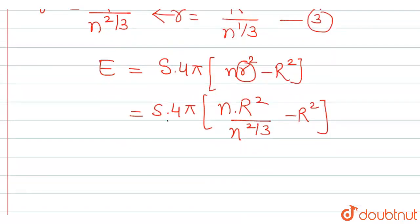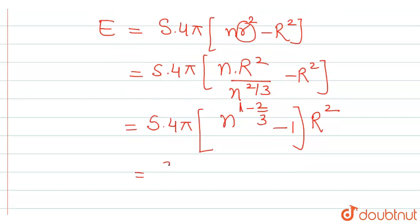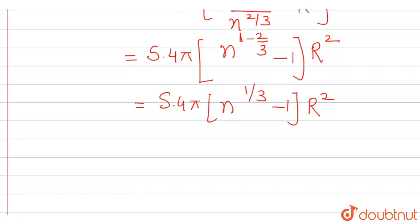Now, using the expression for third, we can have s into 4 pi within bracket n raised to 1 minus 2 by 3 minus 1 and we may have capital R square common. This gives us s into 4 pi n raised to 1 by 3 minus 1 into capital R square. Now we may put the values of all the things given in the equation.